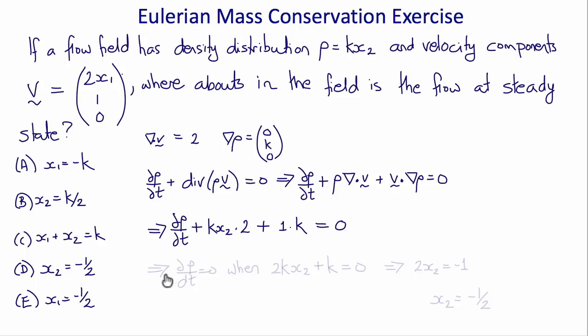Now the problem is at steady state when del rho del t equals 0, which will mean that 2 times kx2 plus k equals 0.